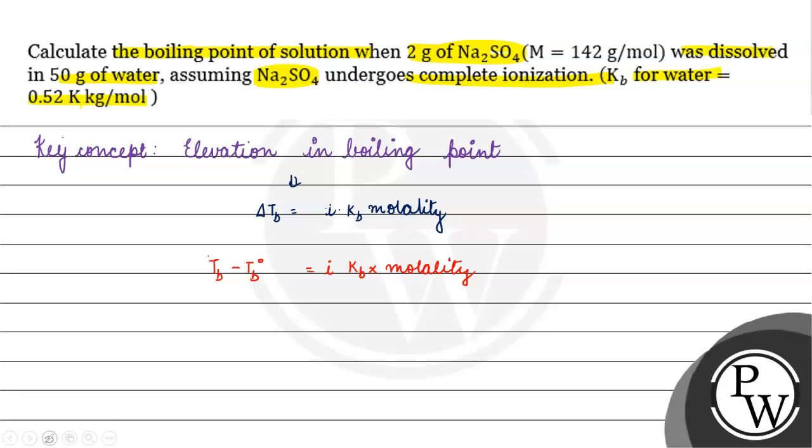What happens for Tb0? For water. What happens for i? Na₂SO₄, if it will completely dissociate: Na⁺, Na⁺, sulfate ion - total number of ions is 3. i equals 3. Kb is 0.52 Kelvin kg per mole.